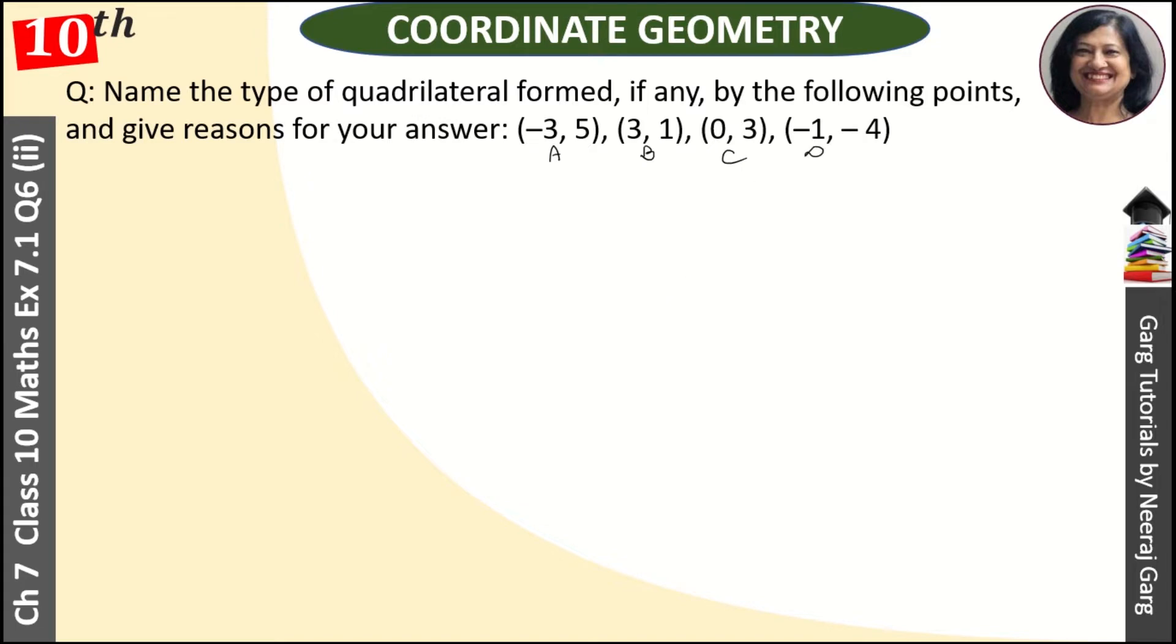Now we will find all four sides using the distance formula, we'll find the diagonals - that is, we'll find the lengths of all sides and diagonals. And after that we'll see which quadrilateral this is - rectangle, square, parallelogram, rhombus, what is it?